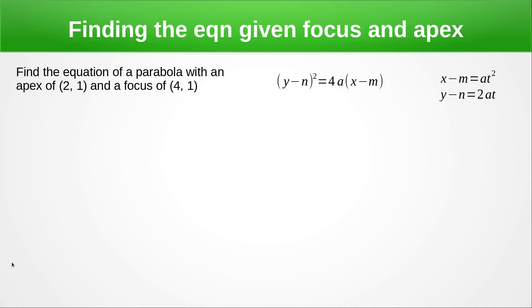Okay, for our last example we're going to find the equation. We've got the focus and the apex. So the first thing we need is to find a, so that's going to be the distance between these two points. A is going to be positive because the focus is to the right of the apex. So the distance is 2, so that means a is 2.